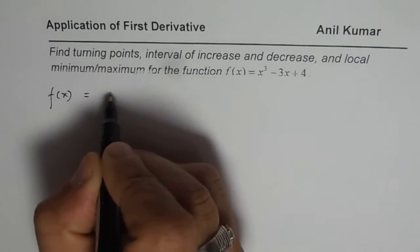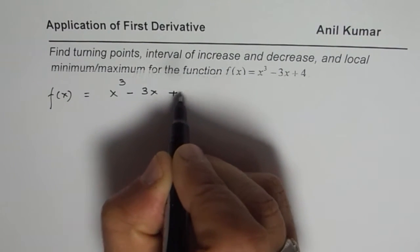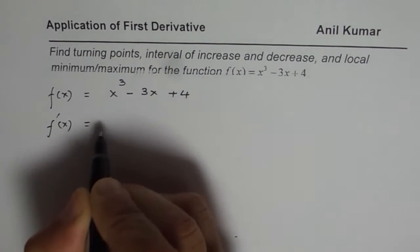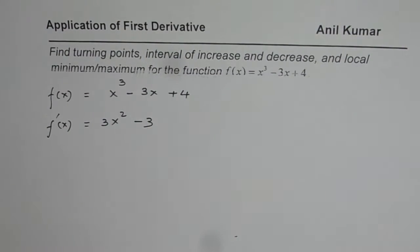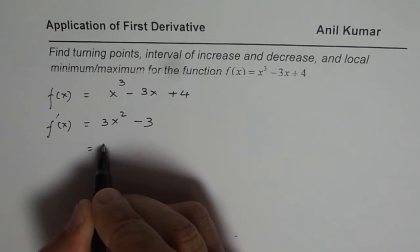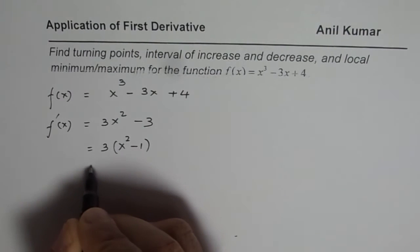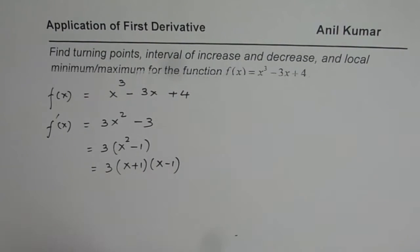We are given a cubic function f(x) = x³ - 3x + 4. Let's find its derivative. Its derivative is going to be quadratic in nature: it is 3x² - 3. We can factor this as 3(x² - 1), which can be further written as 3(x + 1)(x - 1). Now we are going to analyze this derivative to answer all these questions.